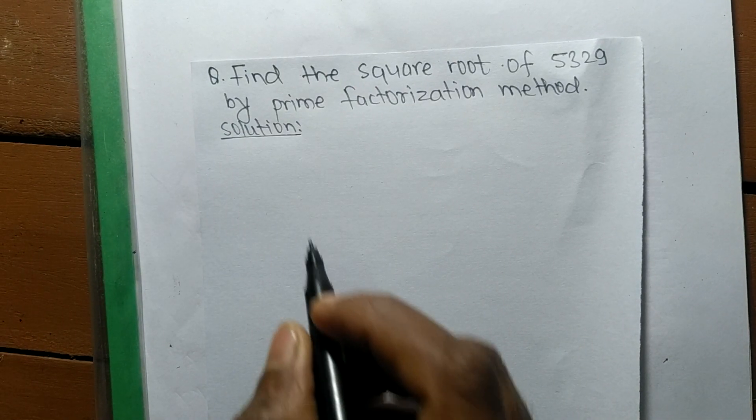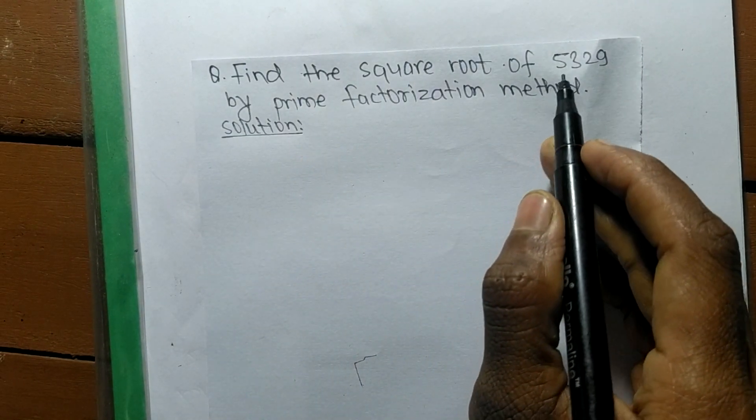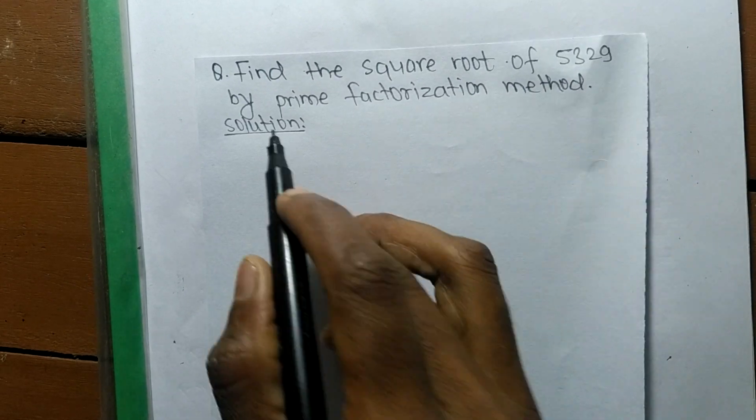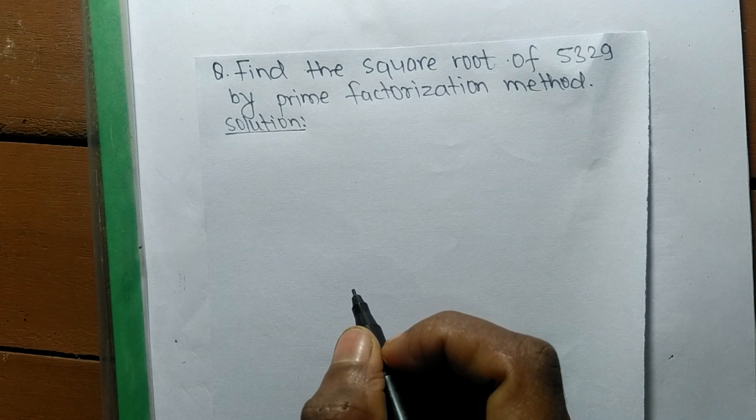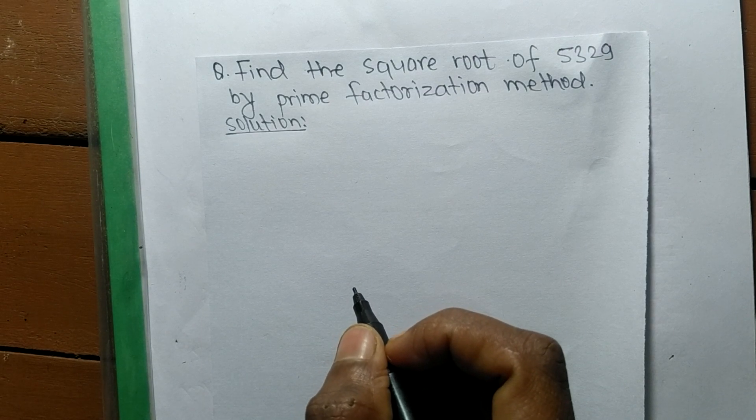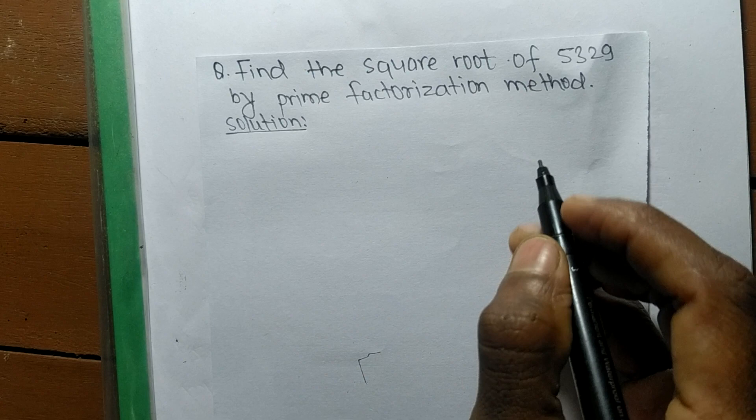So today in this video we shall learn to find the square root of 5329 by prime factorization method. To find out a square root by prime factorization method, first we have to find out the prime factors of the given number.